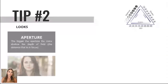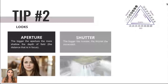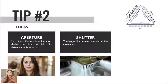Tip number two also has to do with the exposure triangle — the importance of these three settings is that they all help you achieve a certain look. The bigger the aperture, the more shallow your depth of field, creating that beautiful blurry background effect. The shutter controls motion — a bigger number gives you blurrier movement, like that silky smooth water effect, while a smaller number gives you crispy, sharp water.